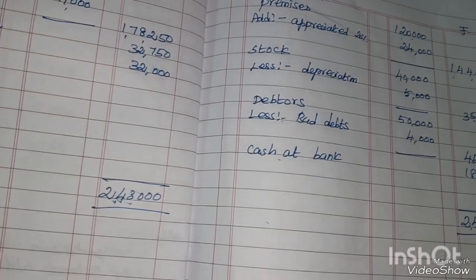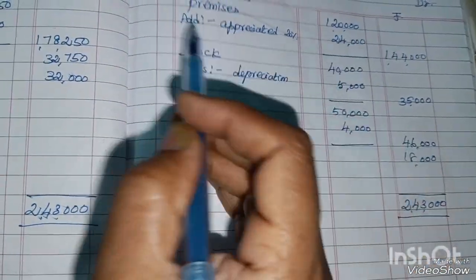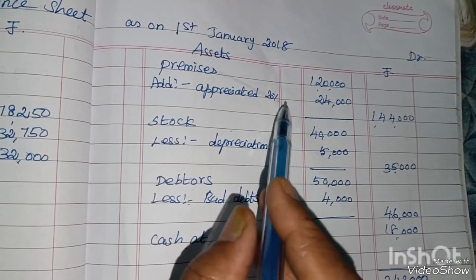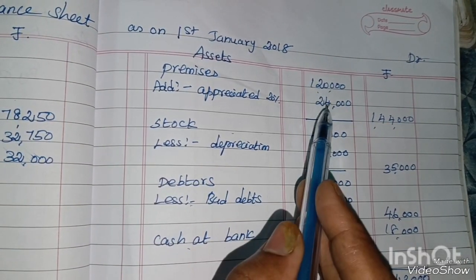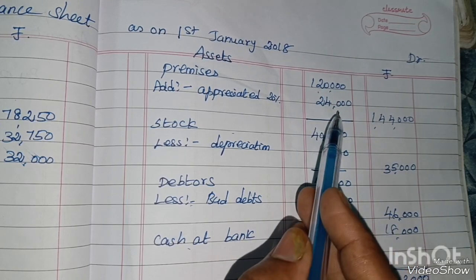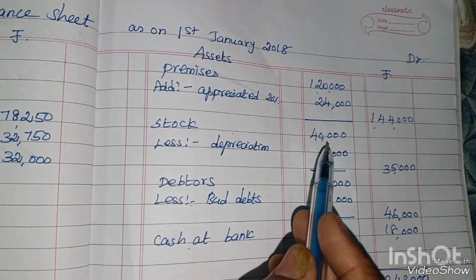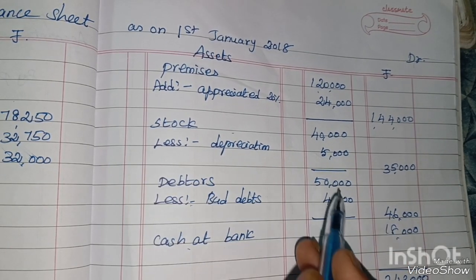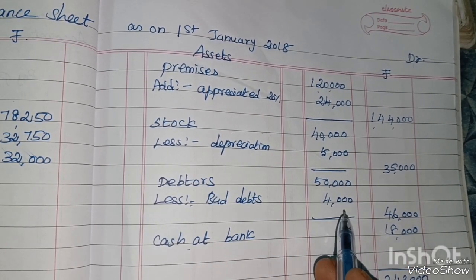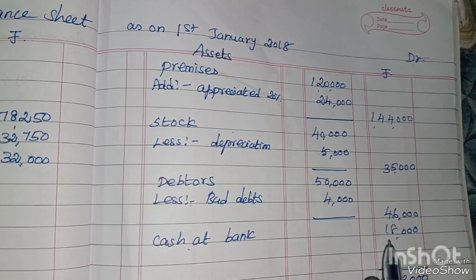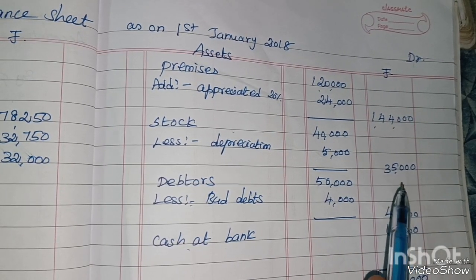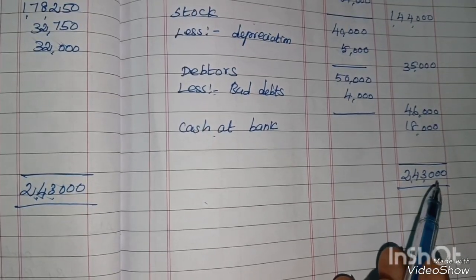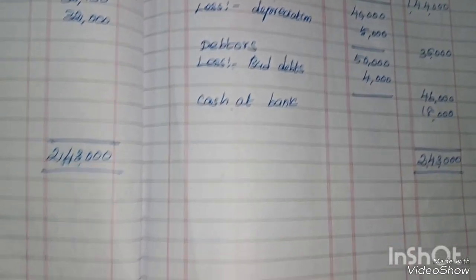On the assets side: Premises ₹1,20,000 plus appreciation of 20% = ₹24,000, giving ₹1,44,000. Stock ₹40,000 less depreciation ₹5,000 = ₹35,000. Debtors ₹50,000 less bad debts provision ₹4,000 = ₹46,000. Cash at bank ₹18,000. Total assets: ₹1,44,000 + ₹35,000 + ₹46,000 + ₹18,000 = ₹2,43,000.